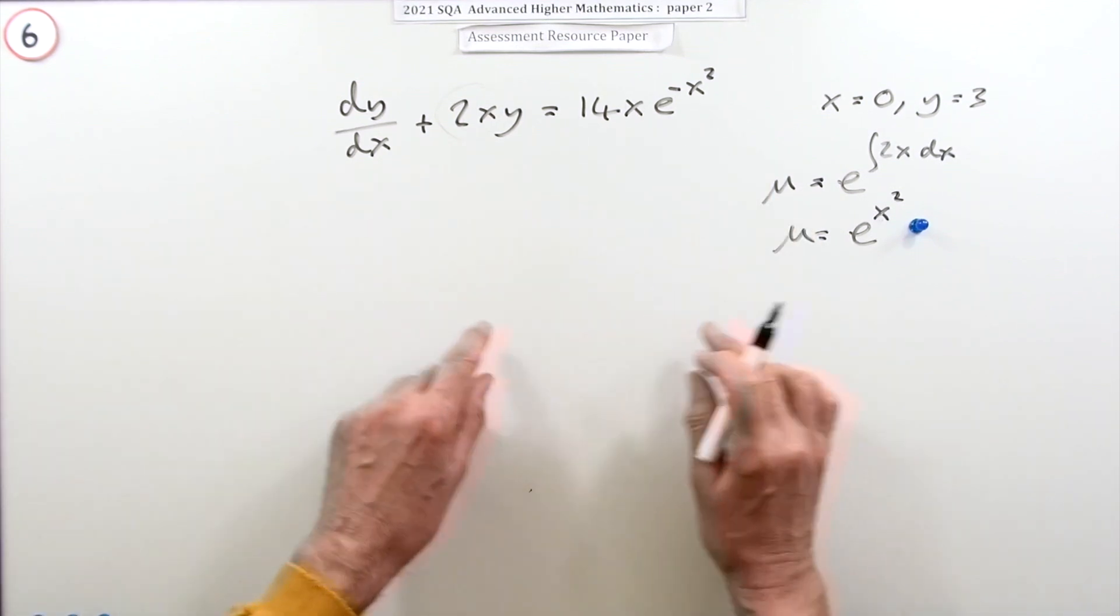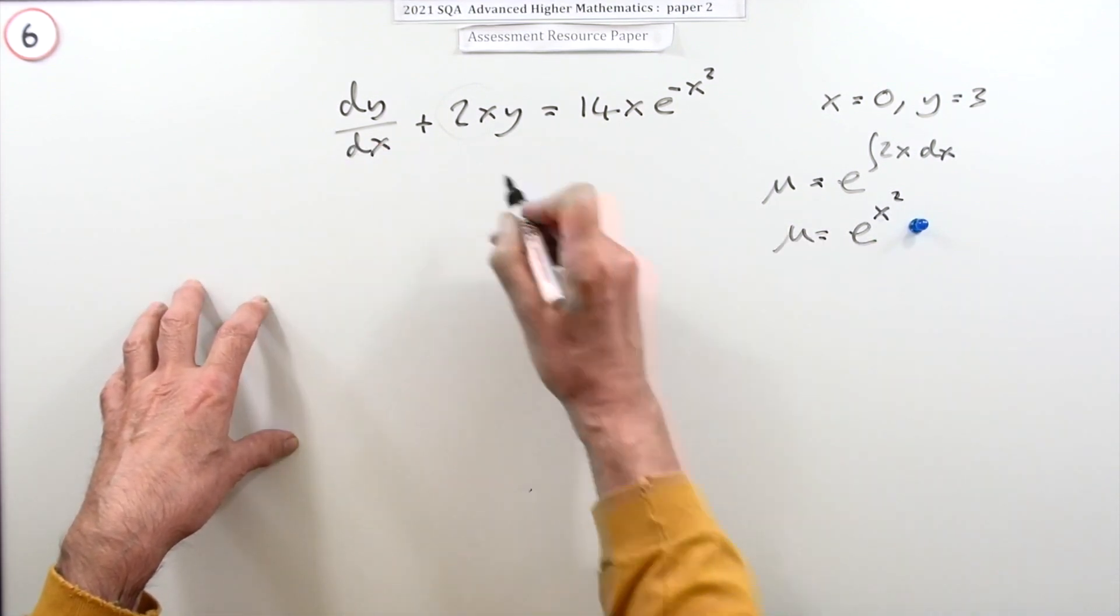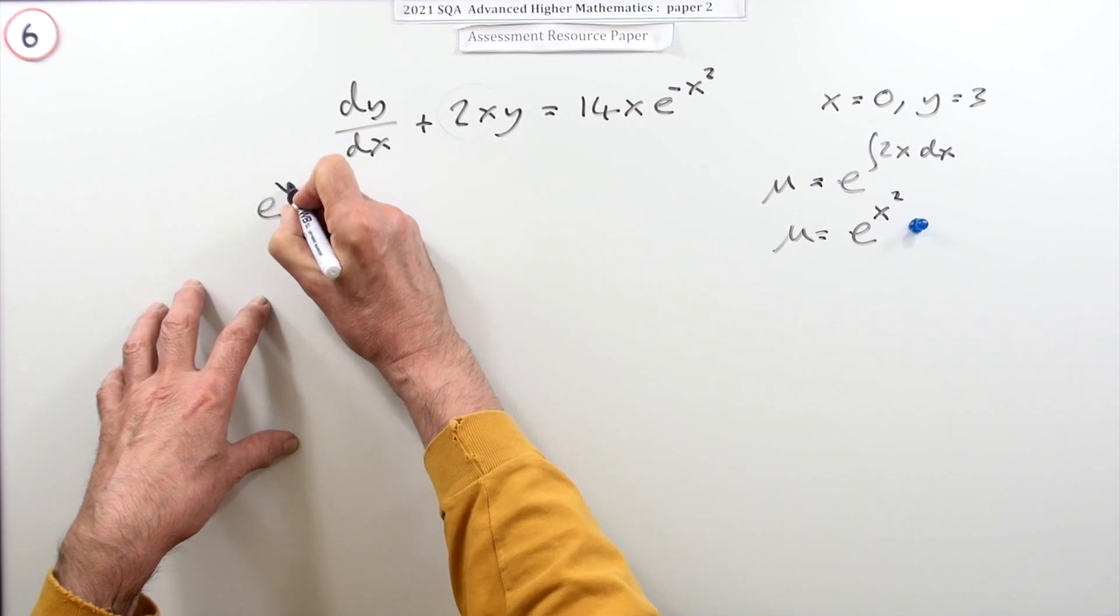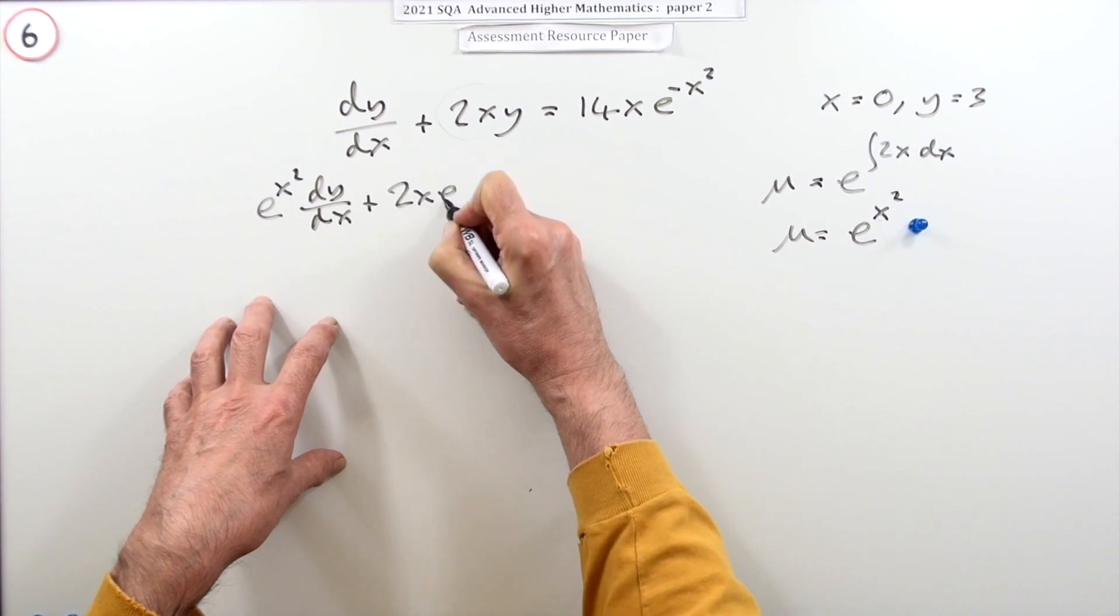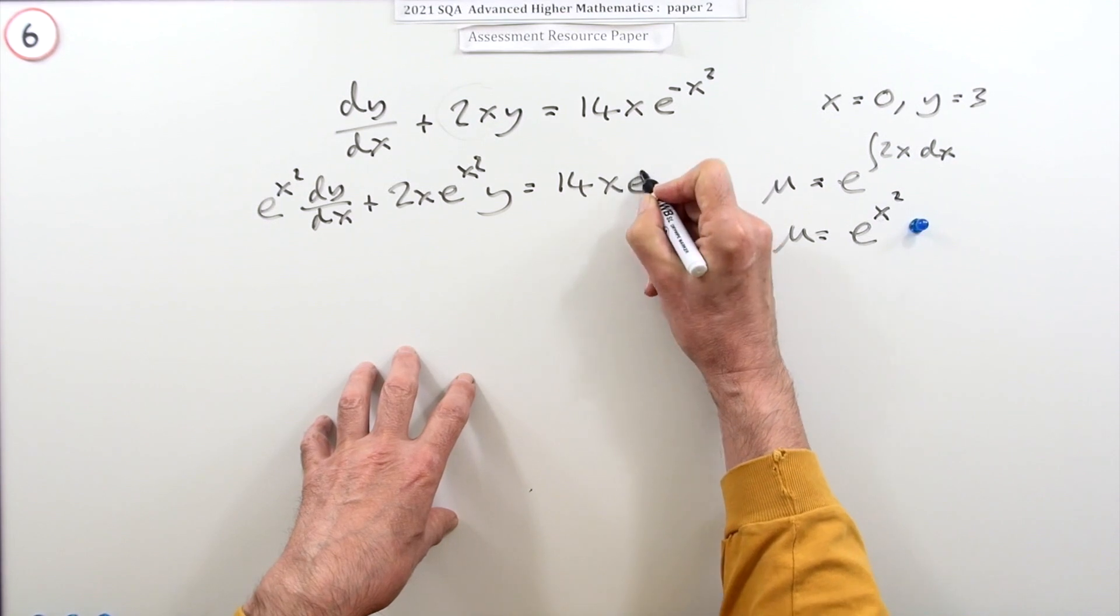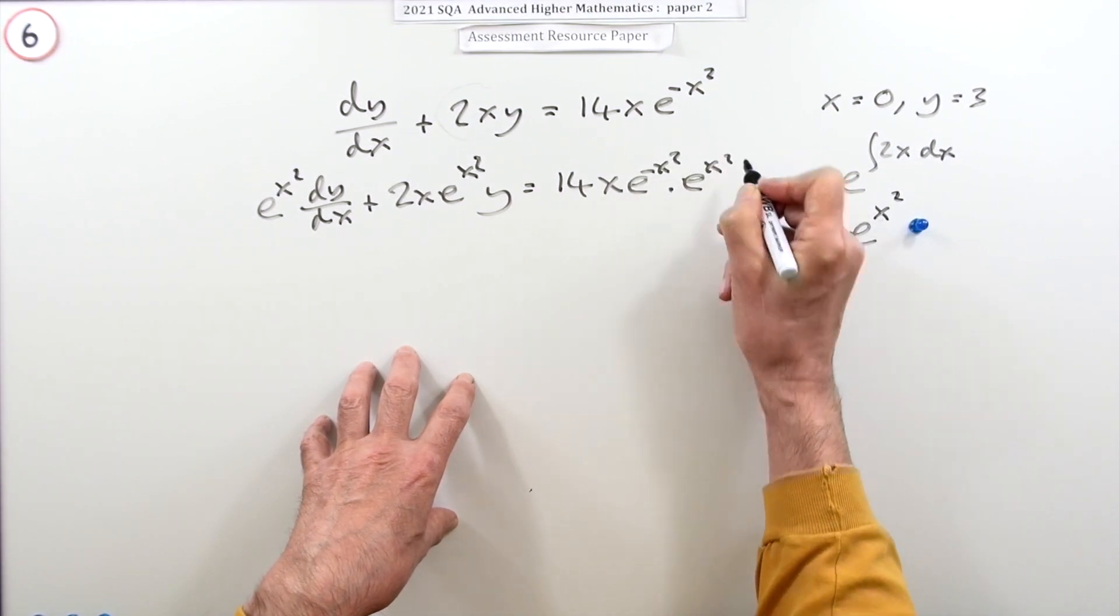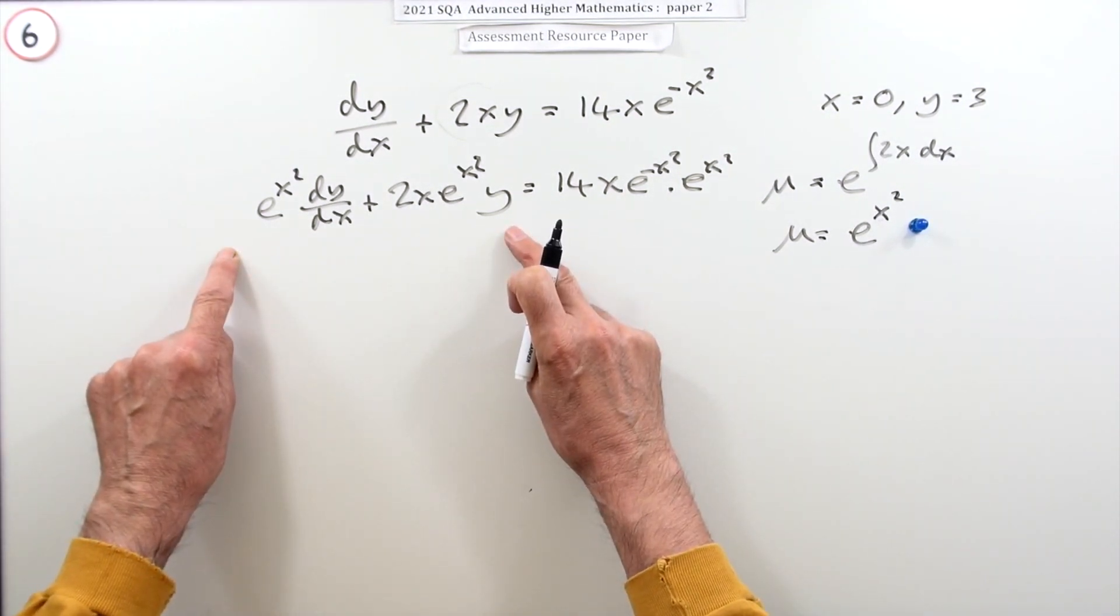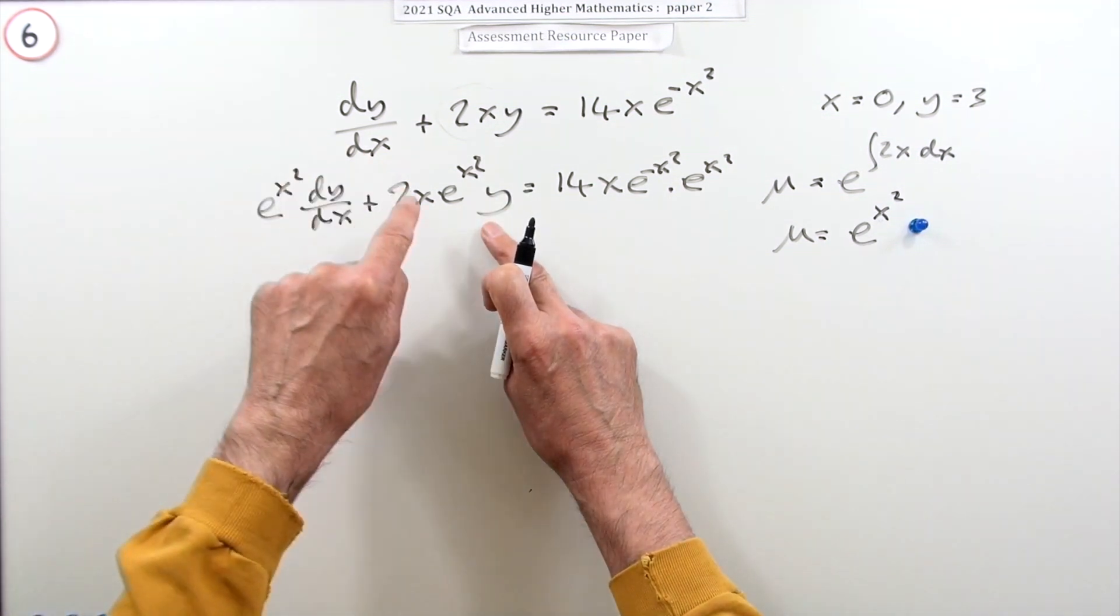Normally you'd just go straight into the second line but I'll put this in to show how it works. Multiplying everything by this factor, e to the x squared would have e to the x squared dy by dx plus 2x e to the x squared y equals 14x e to the negative x squared times e to the x squared. And that's exactly what you would get for the product rule if you started with e to the x squared times y.